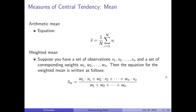The first concept we look at is measures of central tendency. The arithmetic mean is a fancy word for average: xi are our observations, n is the total number of observations, and we sum up all the observations and divide by n.